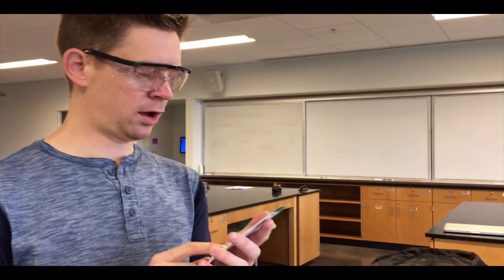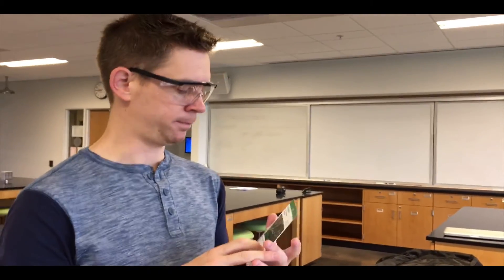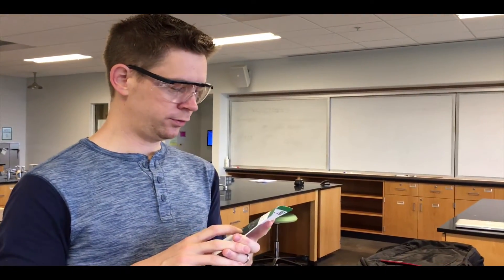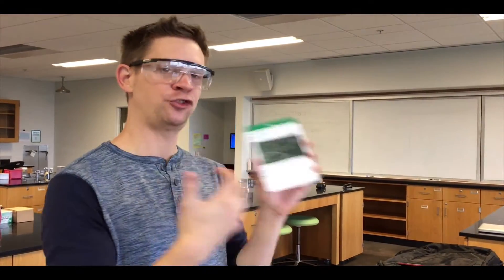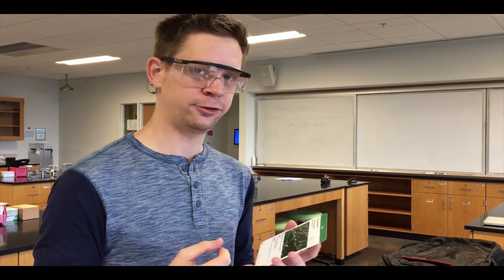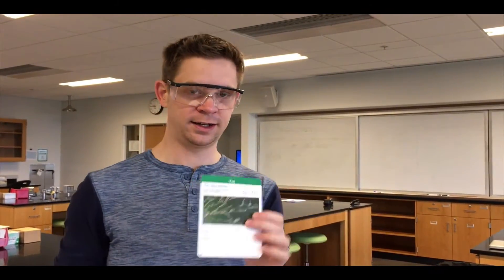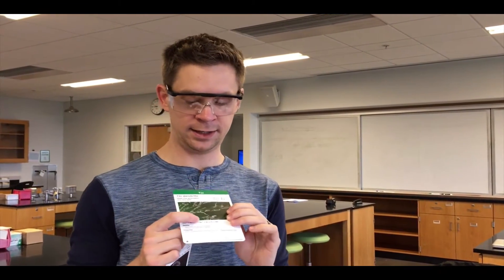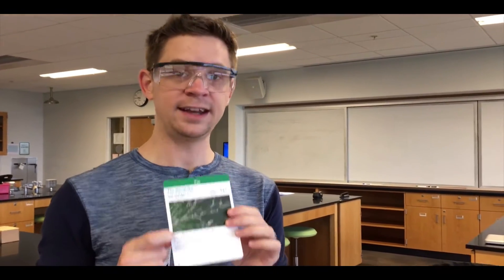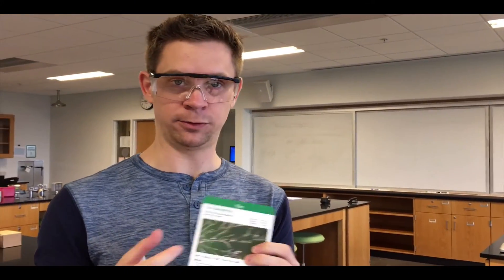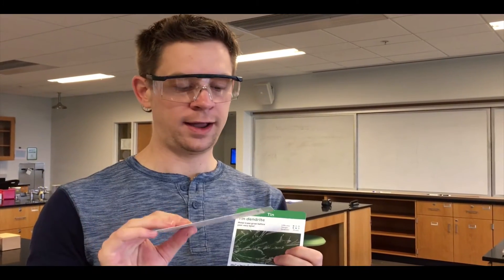So tin is a metal, right? And what metals are really good at is exchanging electrons. This kit illustrates how tin can either gain or lose electrons in chemical reactions. In the dendrite experiment we had tin-2 plus gaining electrons to form tin metal, and we got the beautiful metal solid.